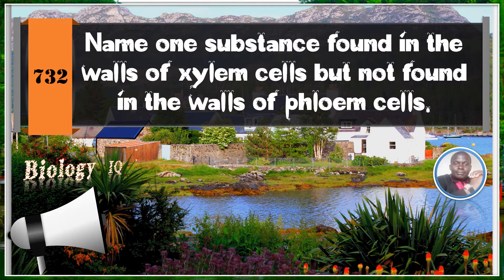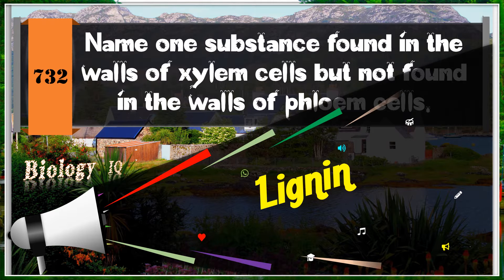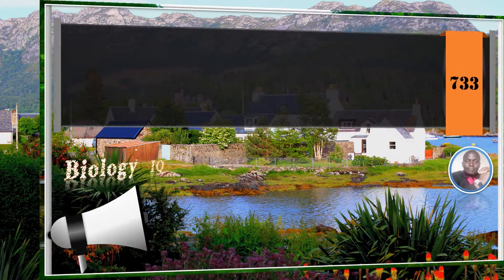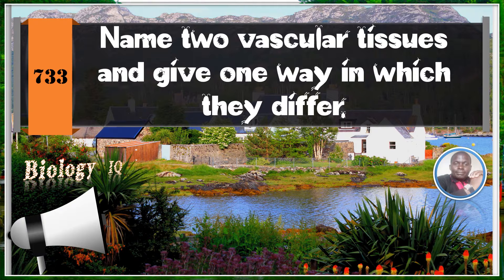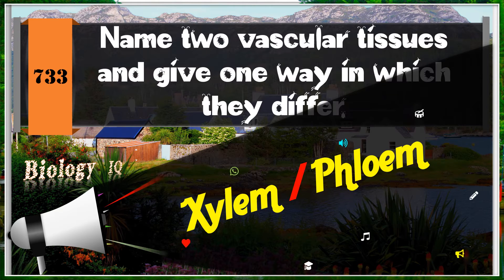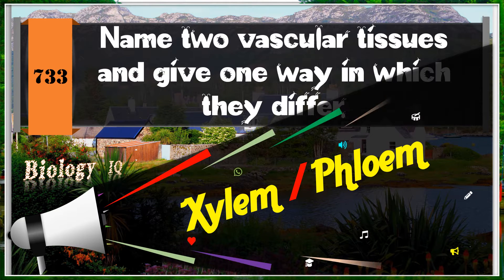Question 1: Name one substance found in the wall of xylem cells but not found in the walls of phloem cells. Question 2: Name two vascular tissues and give one way in which they differ. The xylem and the phloem. They differ in that the xylem walls are lignified.